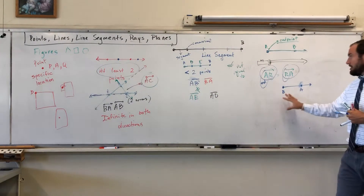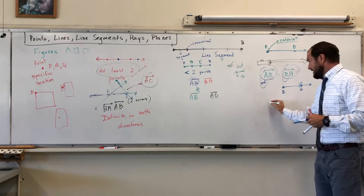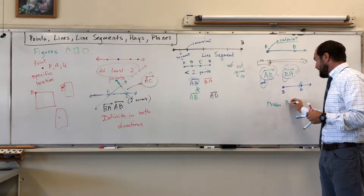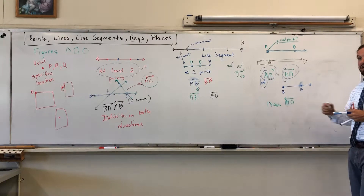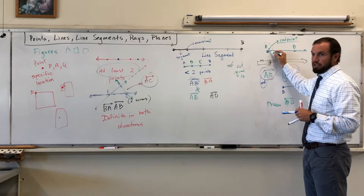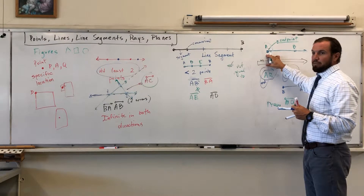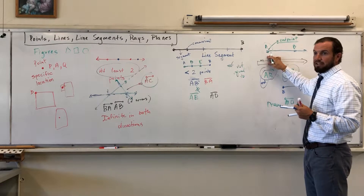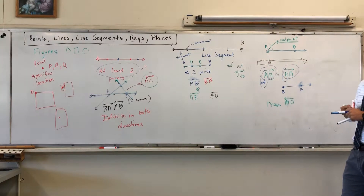Lines are easy to label because the order of letters doesn't matter. Segments are the same. But rays are different because where you put the arrow matters. When we practice drawing, I might say draw ray MO — a lot of students will draw the wrong one because they focus on the letter order rather than noticing that the endpoint is O and the ray goes in the direction of M.